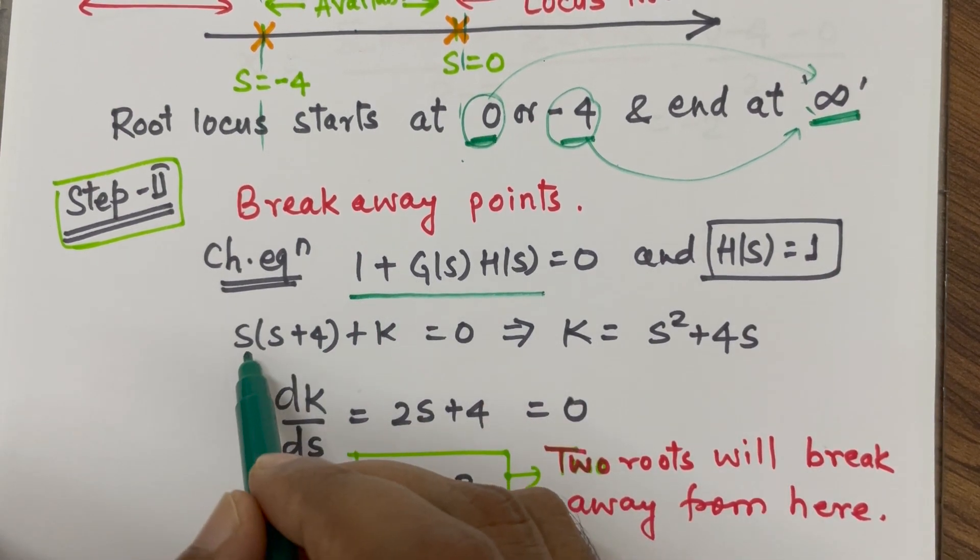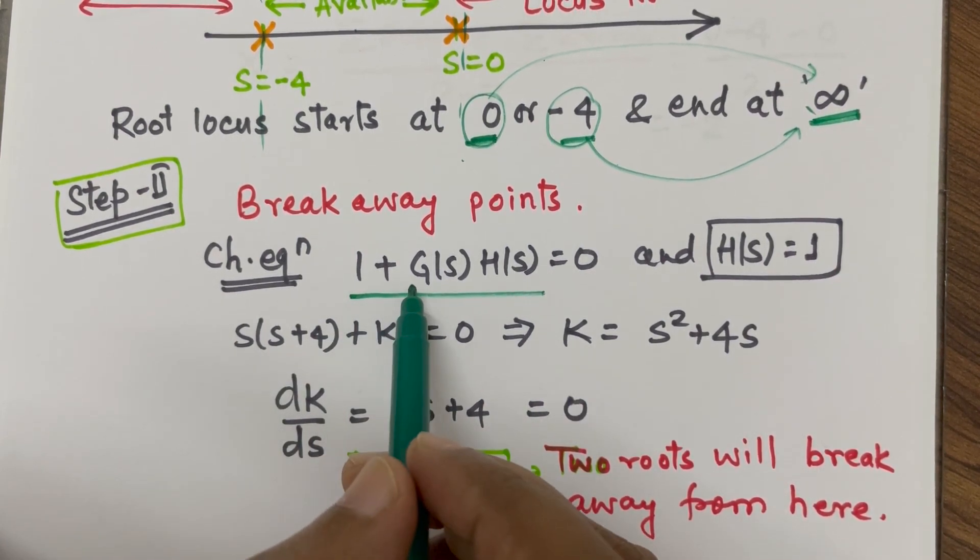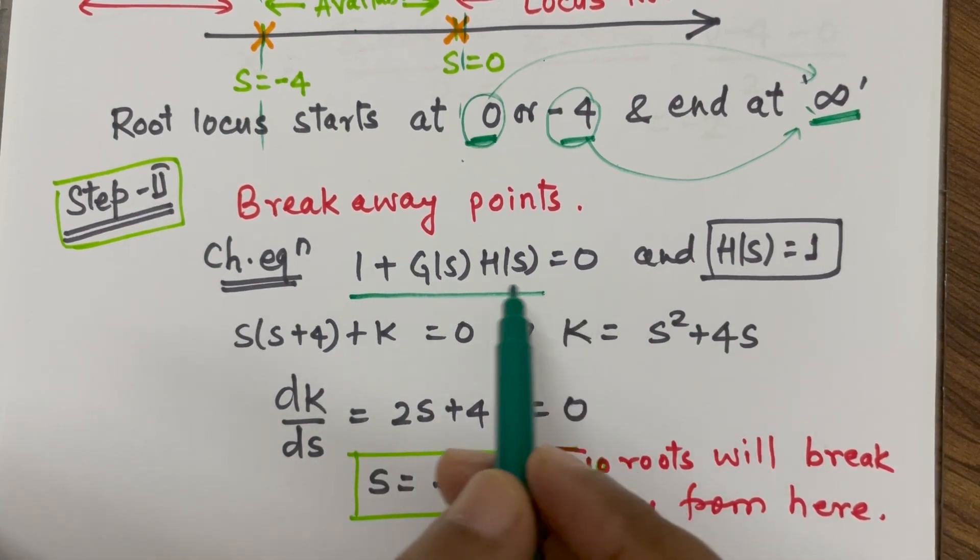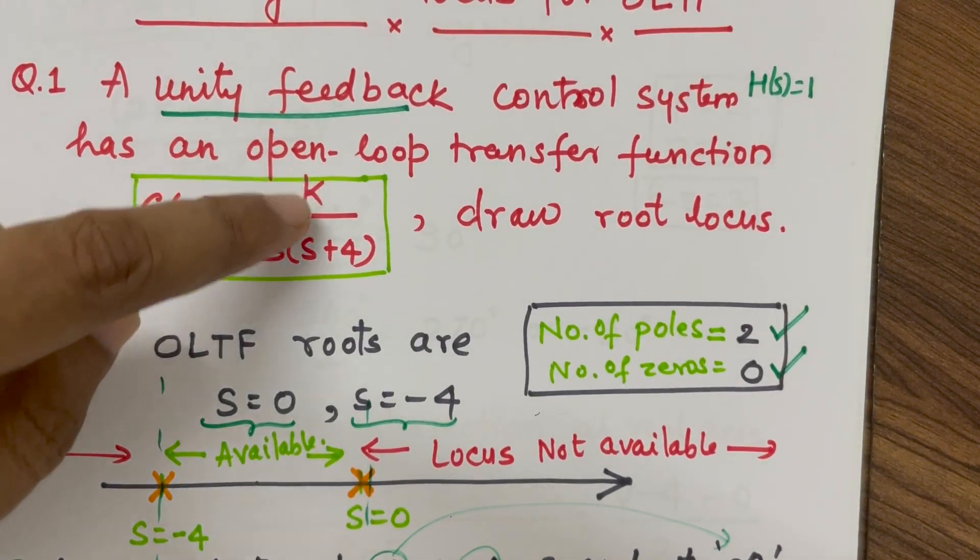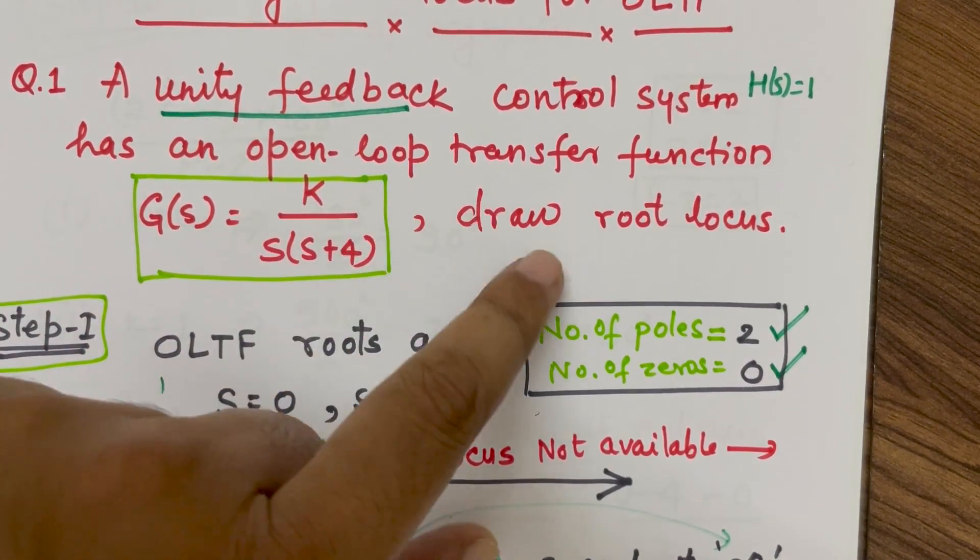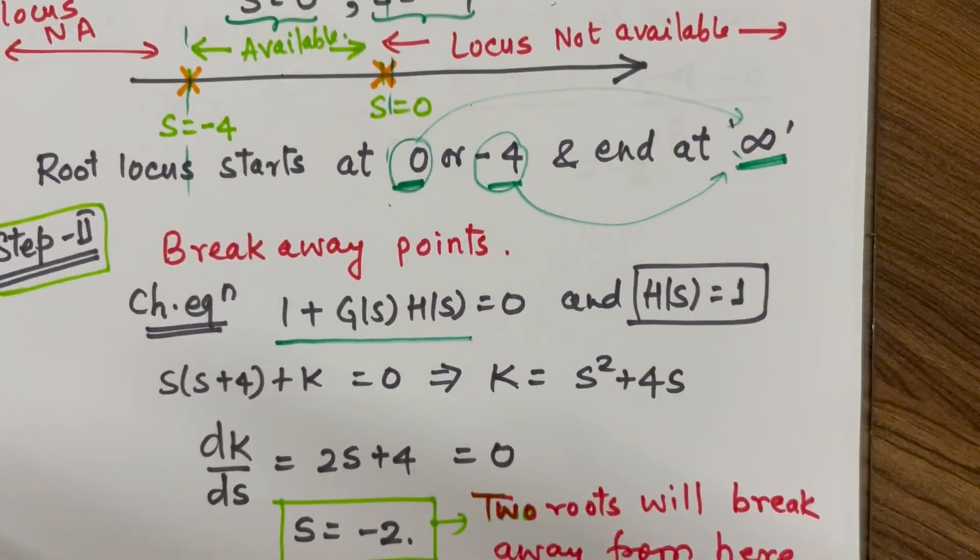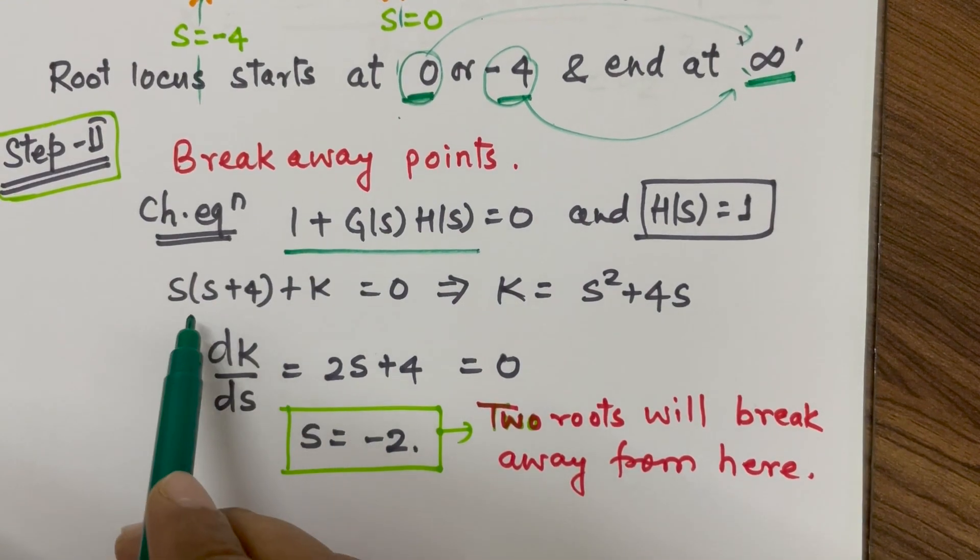we can write the characteristic equation as 1 plus G(s) equal to 0 and G(s) is given as K by s into s plus 4. So, if I add in this plus 1 and make it 0, we get this equation as the characteristic equation.